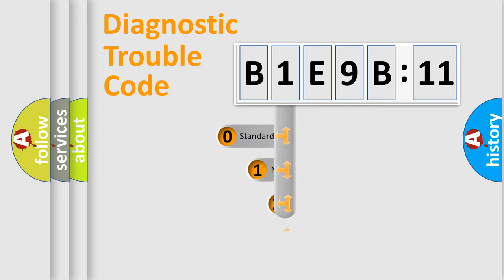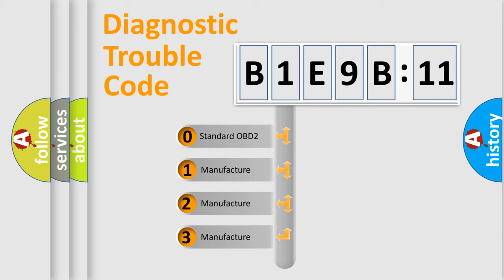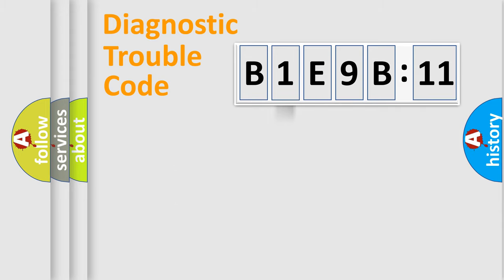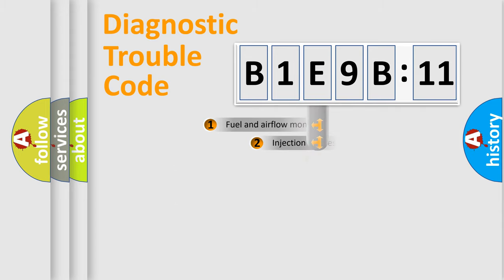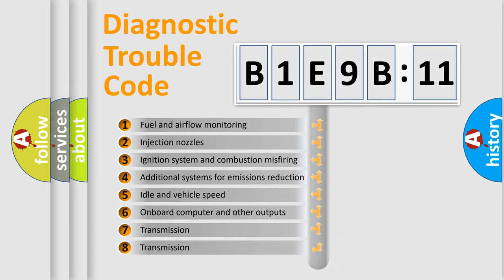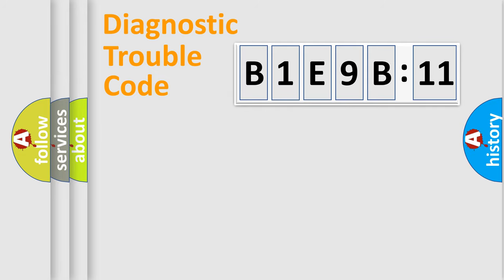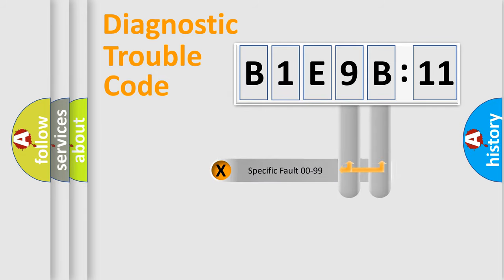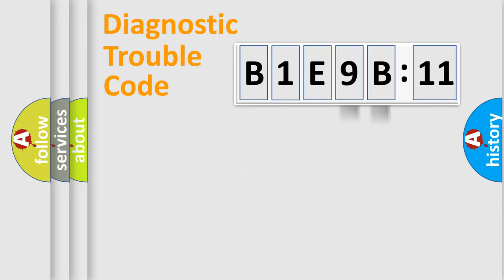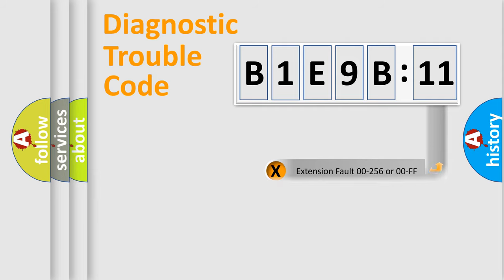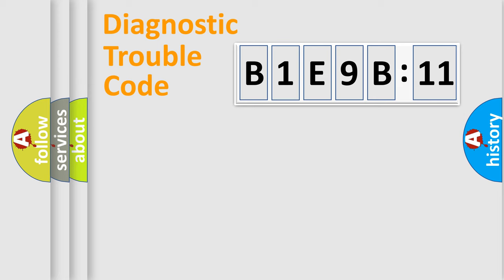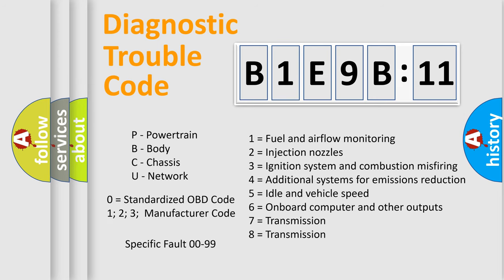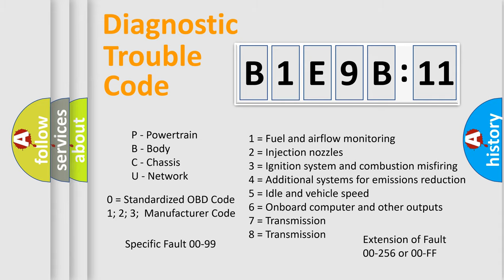This distribution is defined in the first character of the code. If the second character is expressed as zero, it is a standardized error. In the case of numbers 1, 2, or 3, it is a manufacturer-specific error expression. The third character specifies a subset of errors, valid only for standardized DTC codes. Only the last two characters define the specific fault of the group. The add-on to the error code serves to specify the status in more detail — for example, a short to ground. Such a division is valid only if the second character is expressed by the number zero.